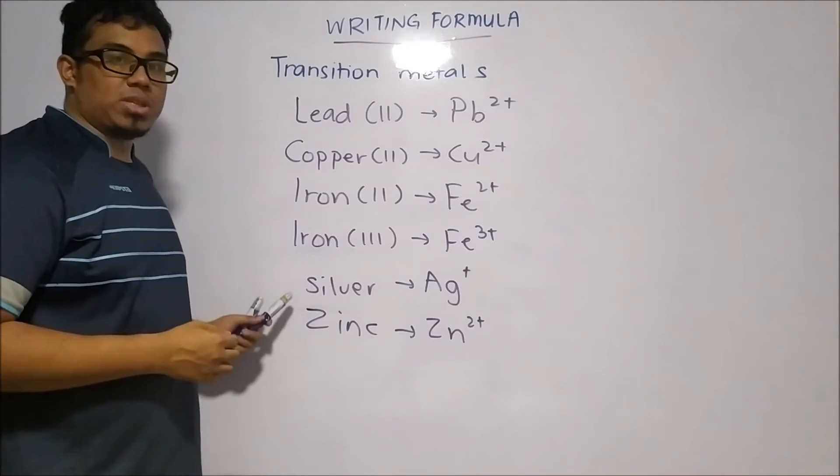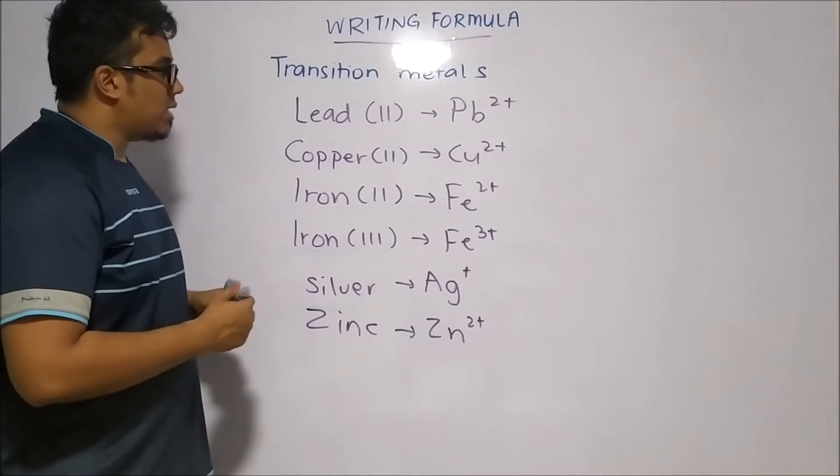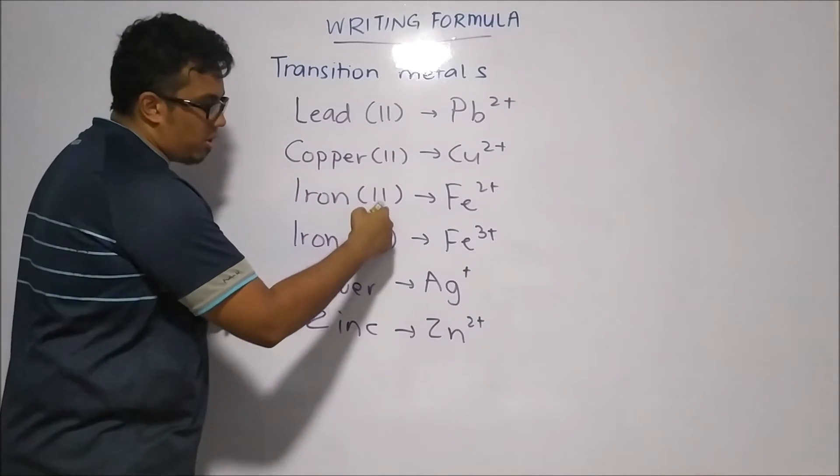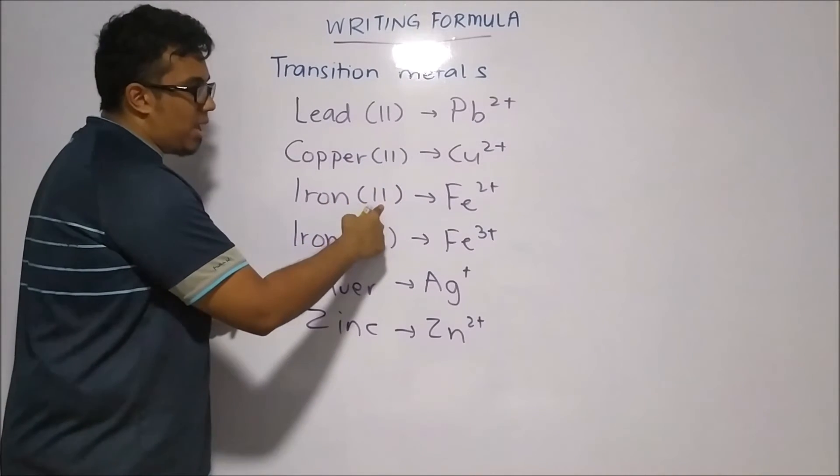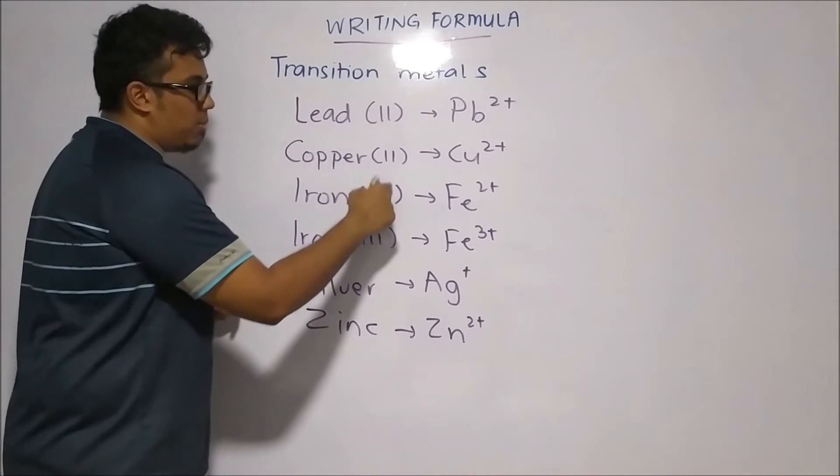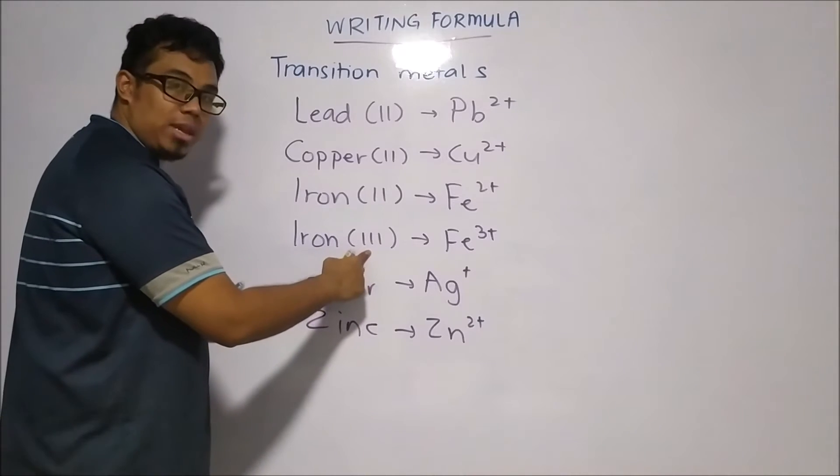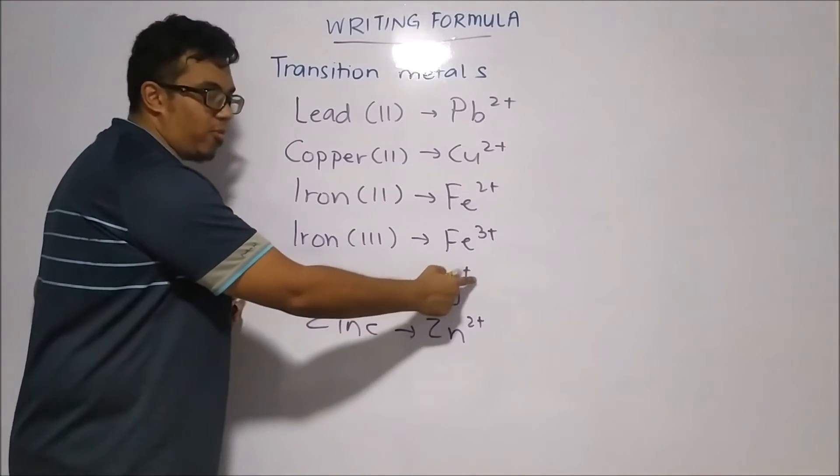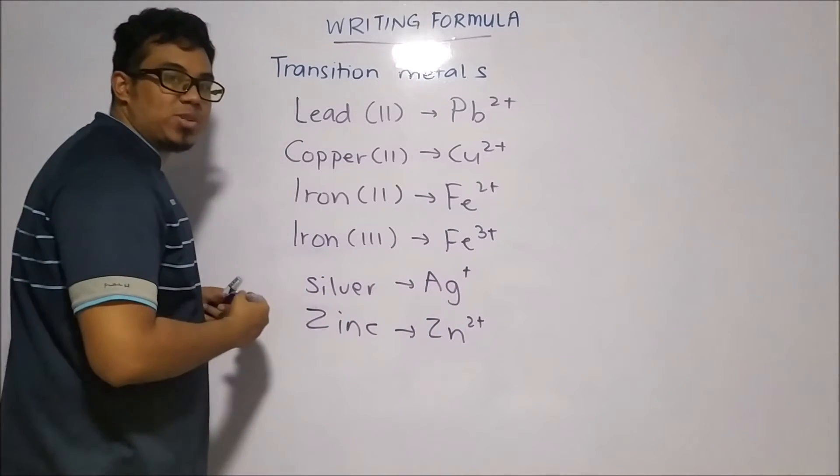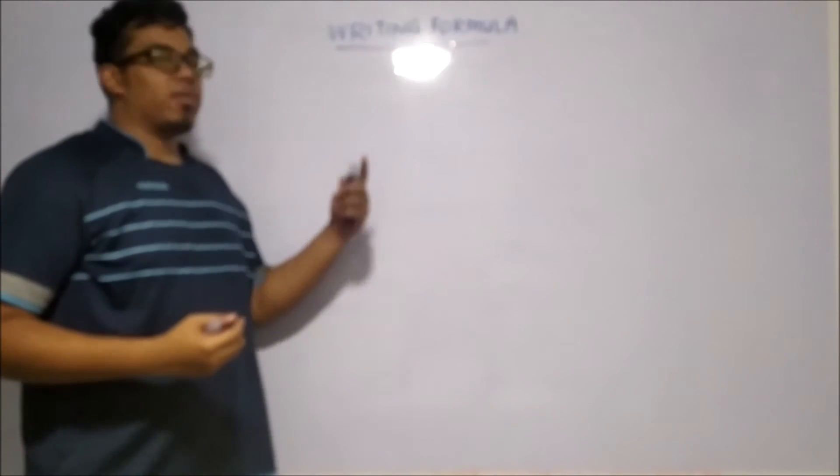Transition metals, these are the most common transition metals that we use. And you can see that the Roman numerals indicate the charge. So for zinc, copper, and iron, you see the 2, it means that it has a charge of 2+. For iron 3, it will have a charge of 3+. For silver and zinc, they have a charge of 1+ and 2+ respectively. We will go about writing the formula then.